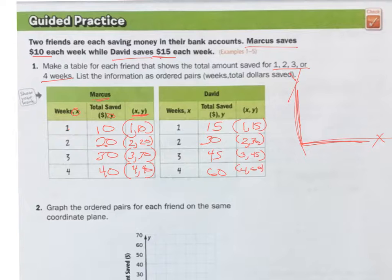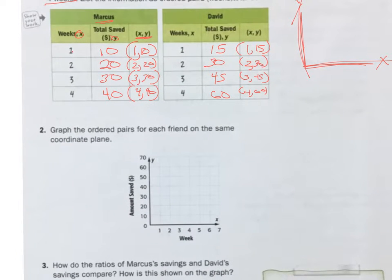Now we can graph it. I'm going to do Marcus in red. So go over $1 here and up $10. So there's the first one. Then $2 and $20. $3, $30. $4, $40. So that is Marcus.